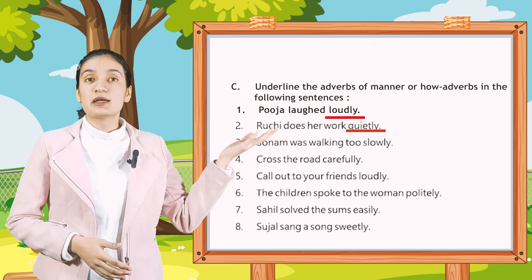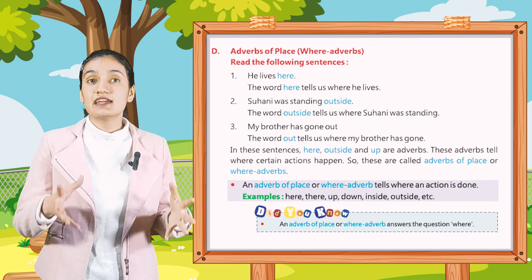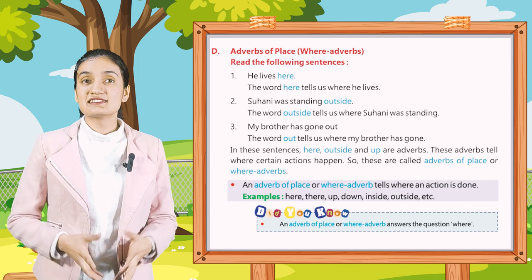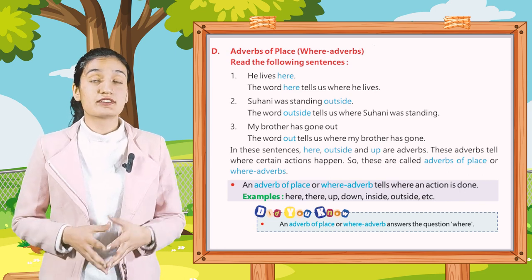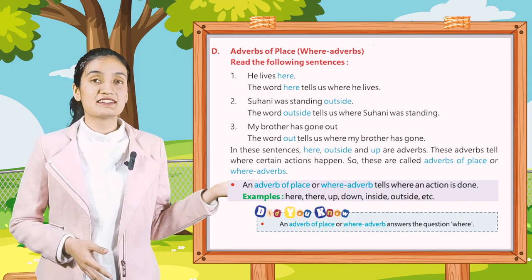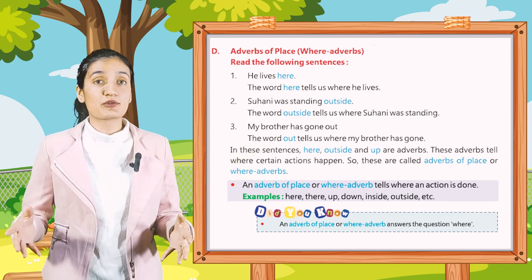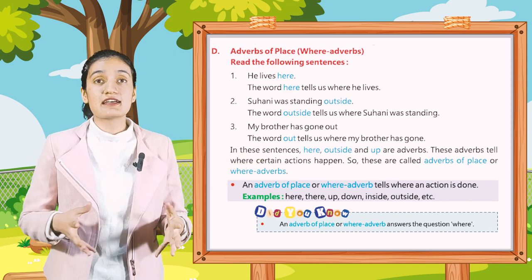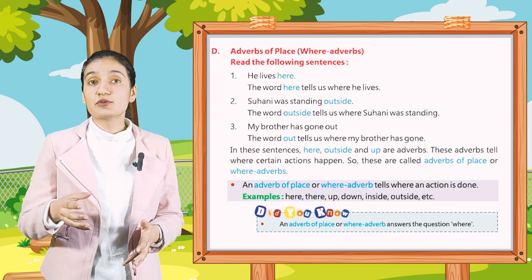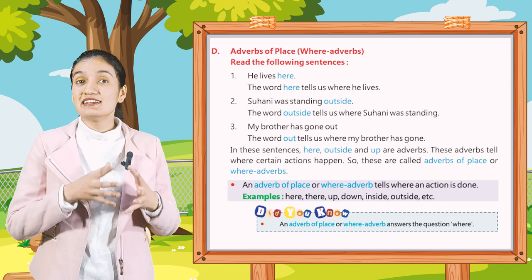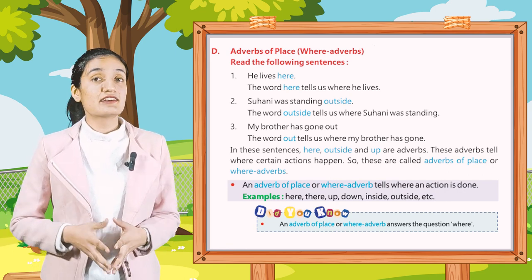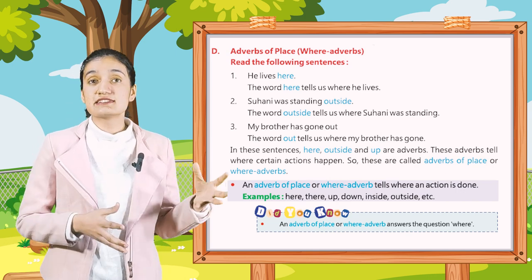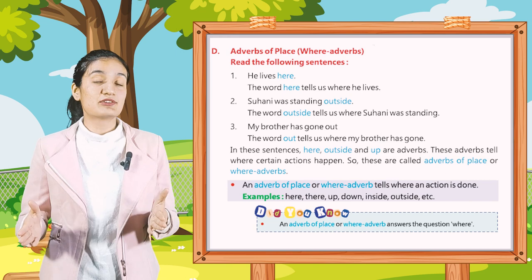Part D: Adverbs of Place — where adverbs. Read the following sentences. First: He lives here — the word 'here' tells us where he lives. Second: Sohoney was standing outside — the word 'outside' tells us where Sohoney was standing. Third: My brother has gone out — the word 'out' tells us where my brother has gone. In these sentences, 'here', 'outside', and 'out' are adverbs.